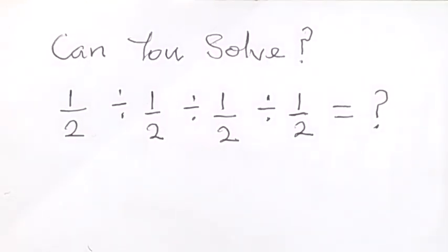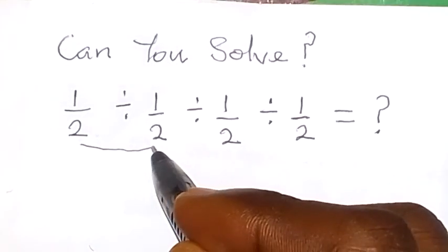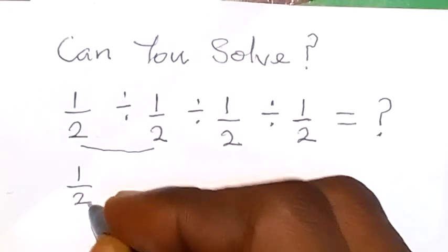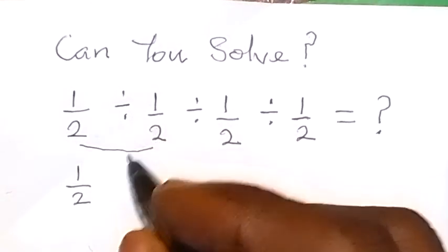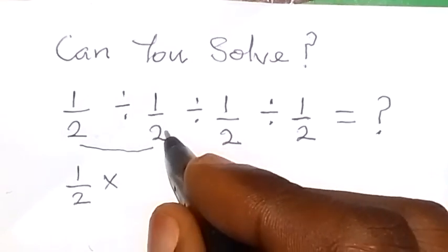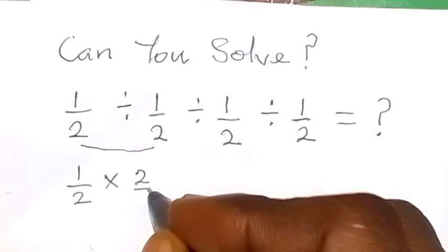Now from here we can look at this problem this way. Let's deal with these two first. We have 1 over 2 here. Then when we change this division into multiplication, 2 will go up here. So we interchange it, 2 go up, then over 1.